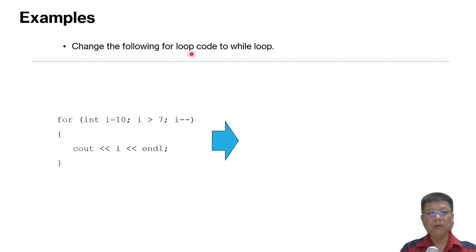We go to the next example. Change the following for loop code to while loop. Let's try. We have initial value int i equal to 10, i larger than 7, i minus minus, and then cout. Let's try the way how I showed you just now. Initial value, we move it out. And then the condition we maintain. We change the for to while. Next is the decremental part, we move it to the last line. Let's try it. I give you 2 minutes.